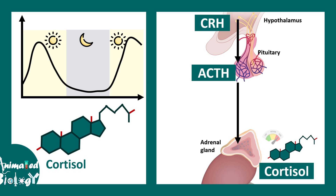When there is too much cortisol in the blood, a negative feedback loop operates. In the short term, this loop acts on the pituitary to reduce ACTH levels. In the long term, it reduces CRH levels. This closed negative feedback loop allows cortisol levels in the blood to be stringently regulated and monitored.